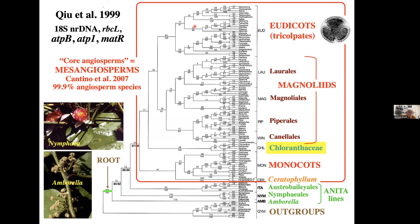At the base of this tree are the three ANITA lines: Amborella, Nymphaeales (or water lilies), and Austrobaileyales. The remaining 99.9% of angiosperm species form the mesangiosperm clade, which includes magnolias, monocots, eudicots with tricolpate-derived types of pollen, the floating aquatic plant Ceratophyllum, and Chloranthaceae — which are the subject of this talk.